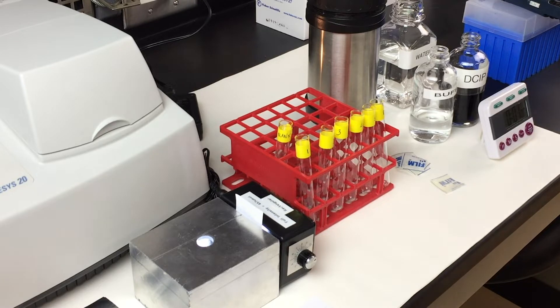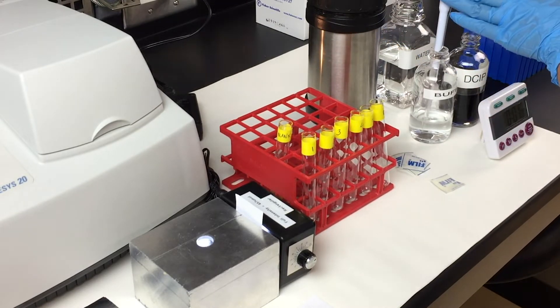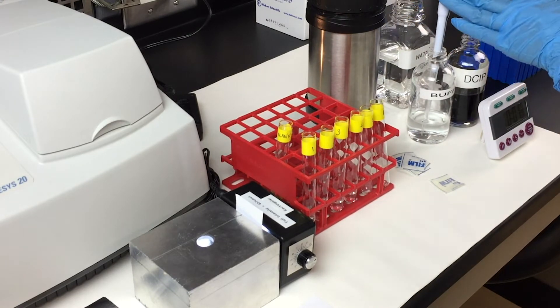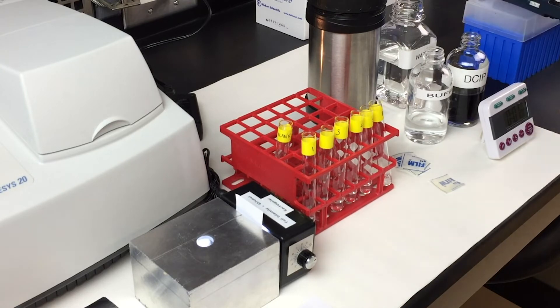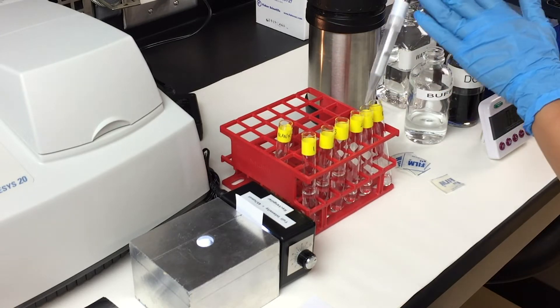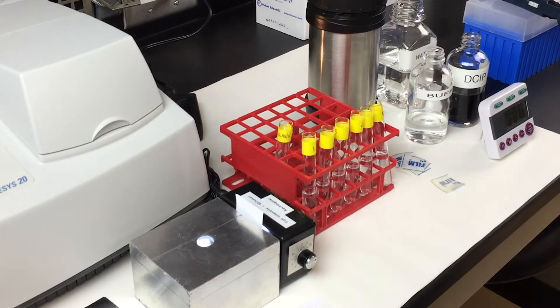In all the tubes, add one ml of buffer, three ml of distilled water, and one ml of DCIP at this point.